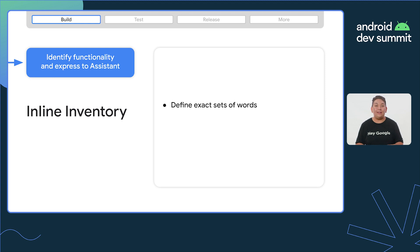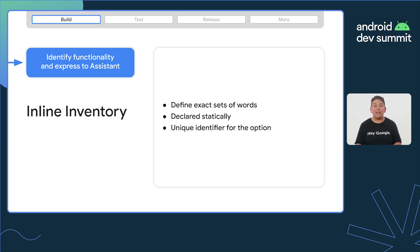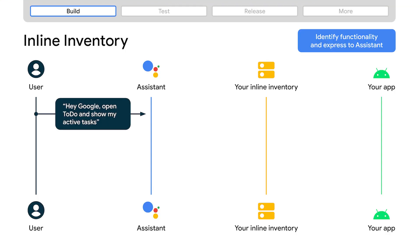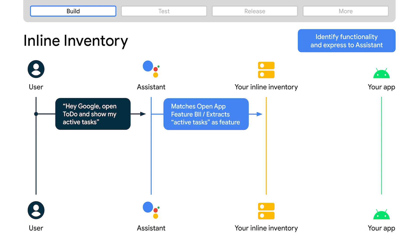Some BIIs use inline inventories. Inline inventories function like a lookup table for BII parameters, expressing the variety of ways users refer to a feature or content in your app into item identifiers that you define. You'll need to define the exact set of words in the inventory that you want Assistant to look up for your users' requests. These options are declared statically in your app's configuration, and a unique identifier for the option is received at runtime as a parameter of the incoming BII. Here, a user says, 'Hey Google, open to-do and show my active tasks.' The system will match the open app feature BII and extract active tasks as the feature parameter. In your inline inventory, you look up active tasks and return the unique identifier of active.